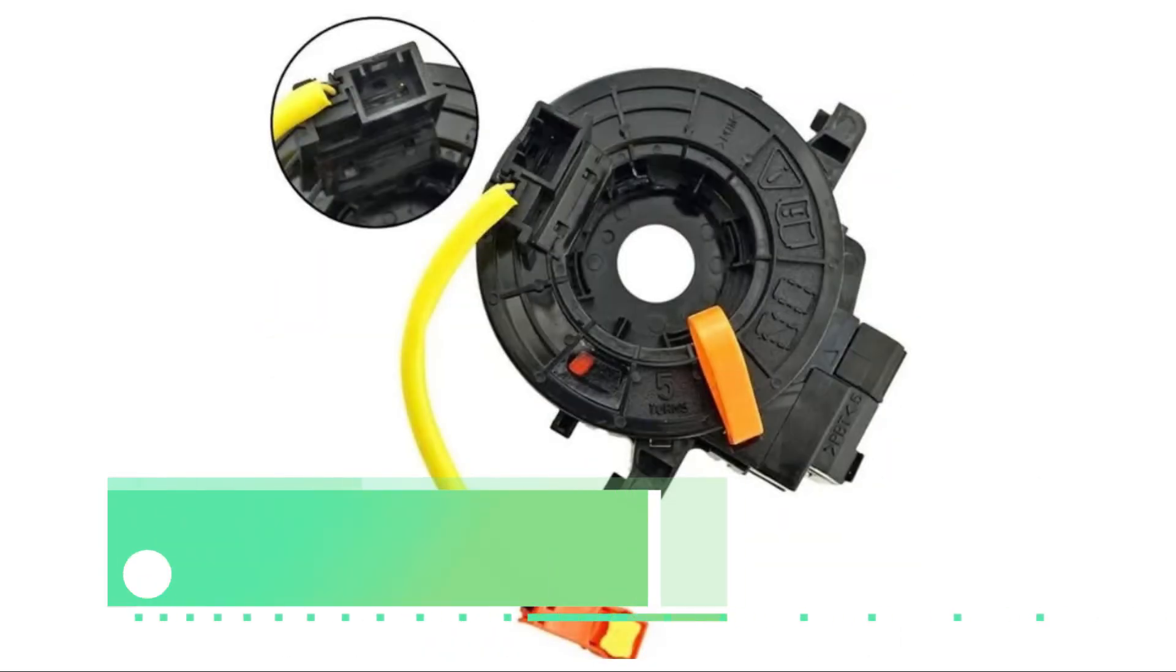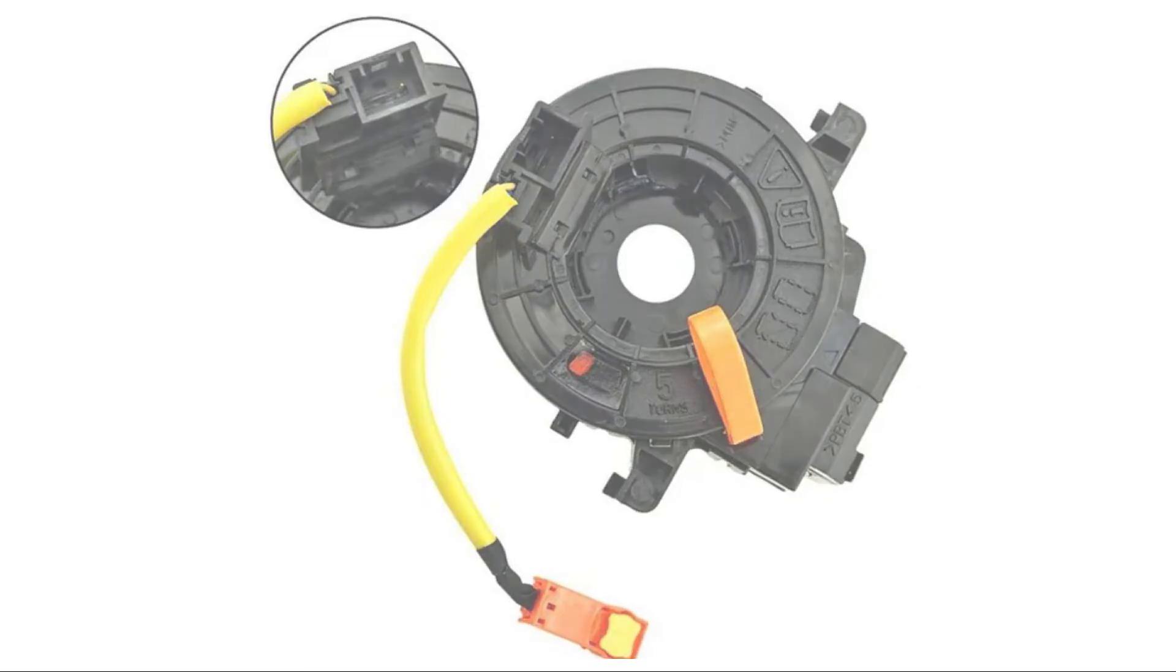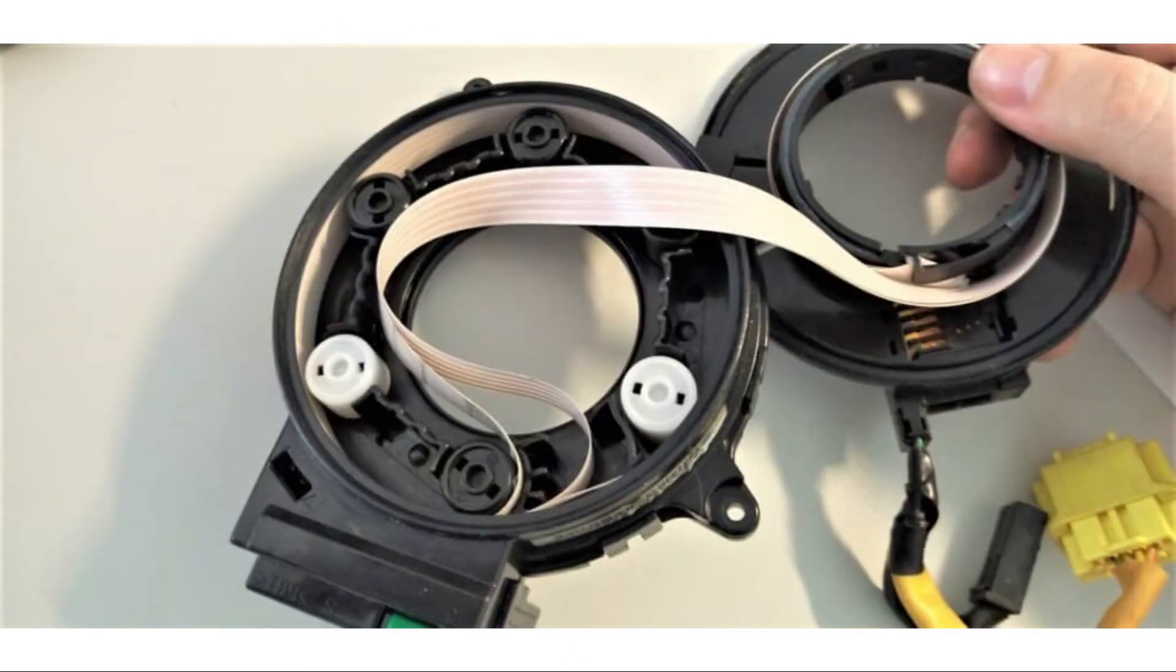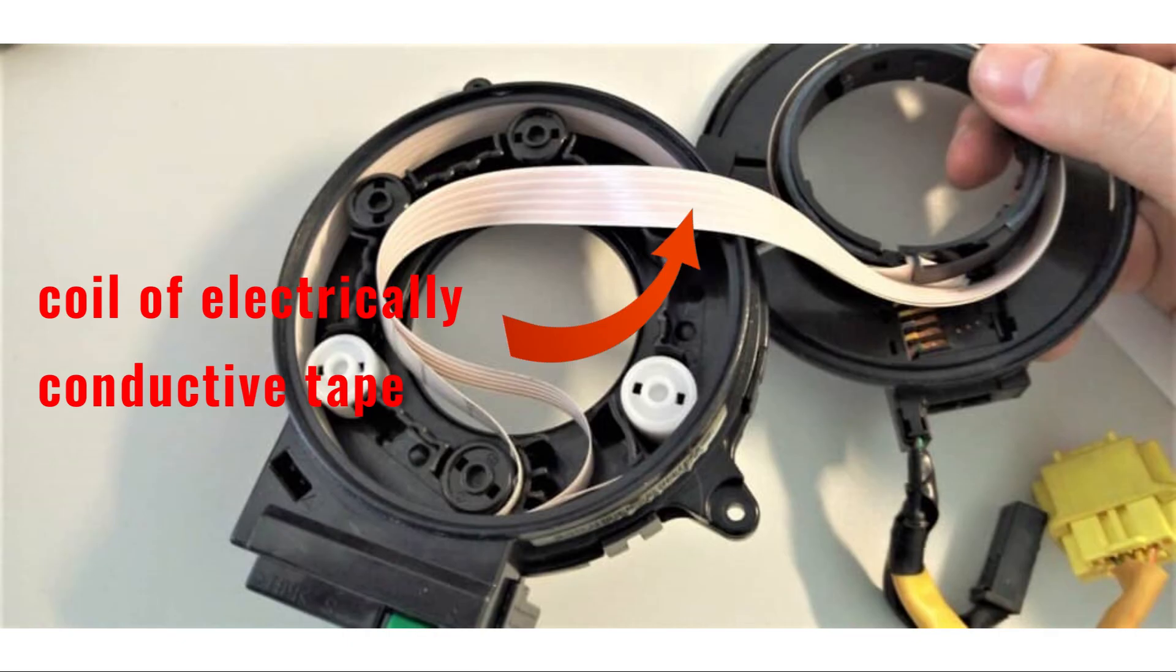Most vehicle manufacturers now use a clock spring to ensure continuity between the components of the steering wheel, such as the horn switch, cruise control switches, airbag, and others, and the wiring harness of the steering column.